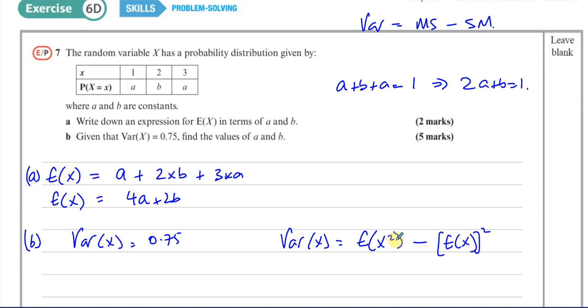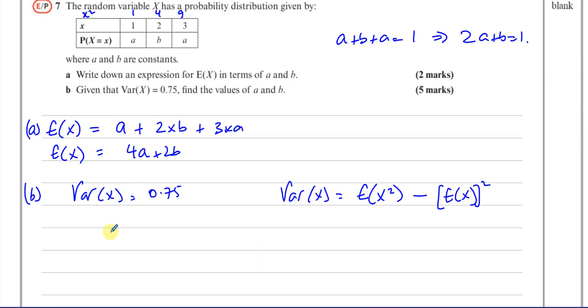Now, E(X²), this one, is going to be when you take the X values and you square them, so that's 1, 4, and 9, and you multiply those by the probabilities. So I can say the variance of X, which is 0.75 or three quarters, I'll write it as a fraction, equals E(X²), which is 1 times a, plus 4 times b, plus 9 times a. That's this part.